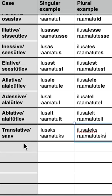Now we're going to move on to these four cases. In Estonian, they're called 'nina takakäntet', which would mean 'behind the nose cases'. Our face or nose is not really the reason they're named so — I'll explain in a little bit why they're called 'nina takakäntet'.